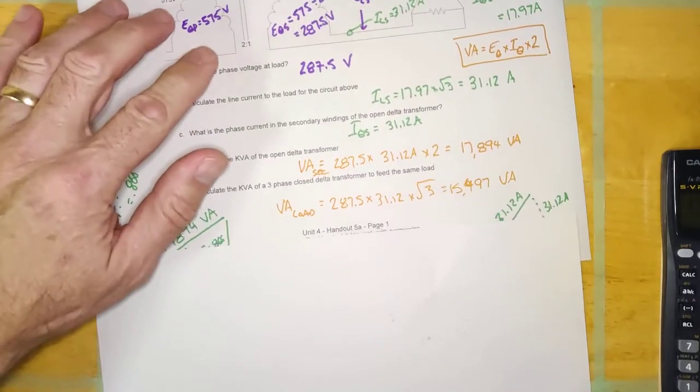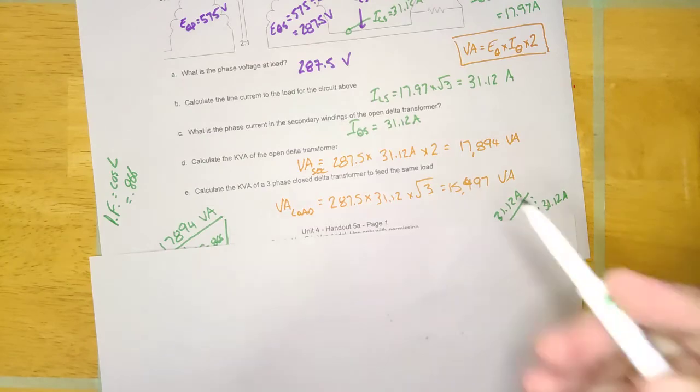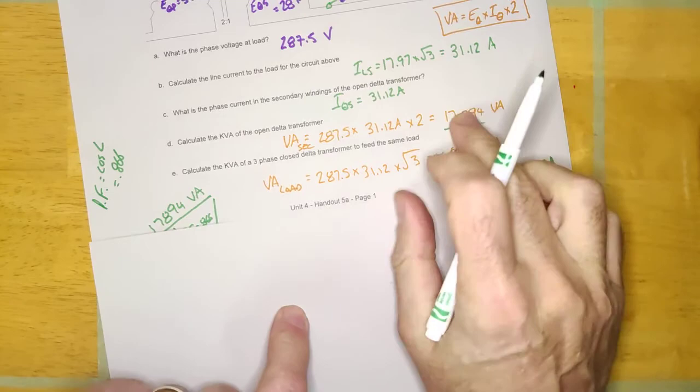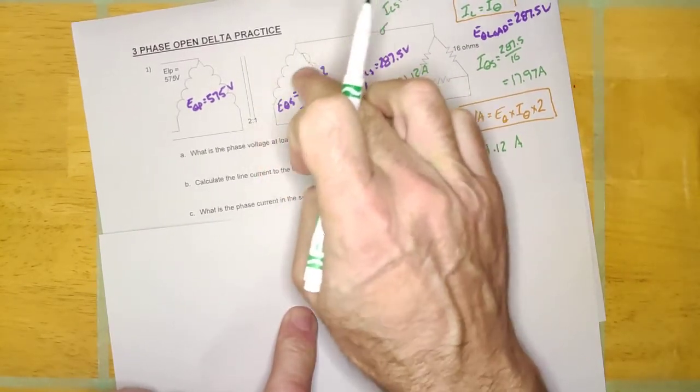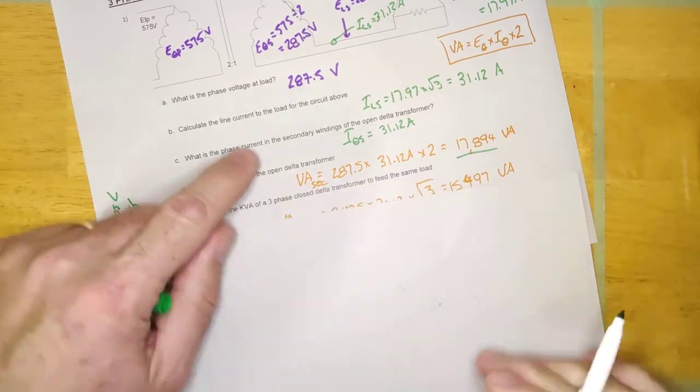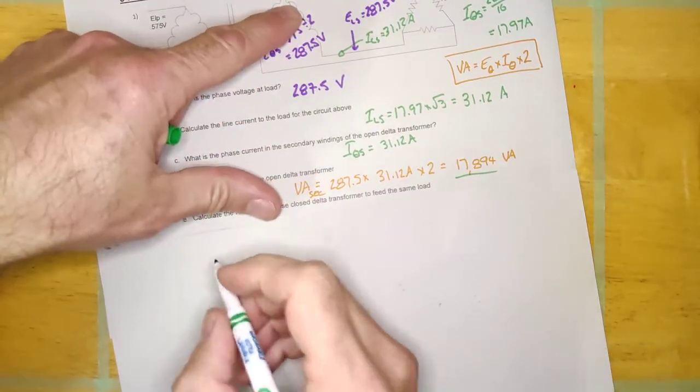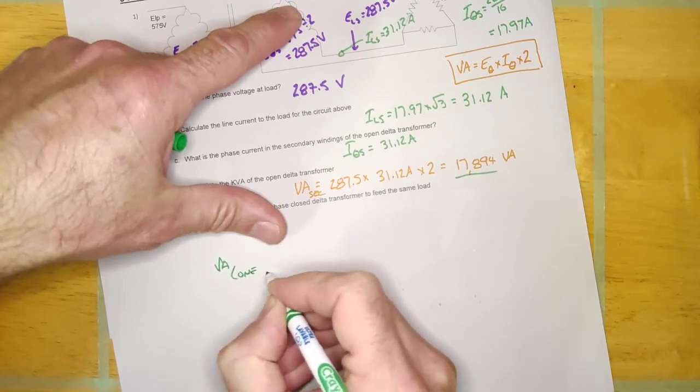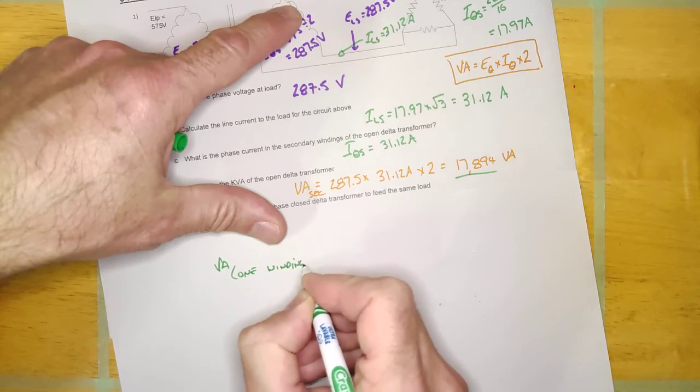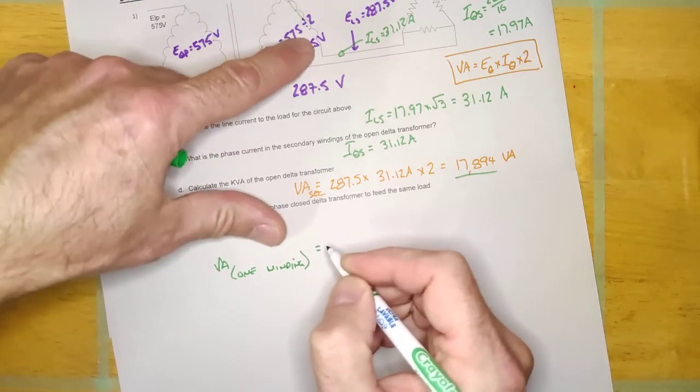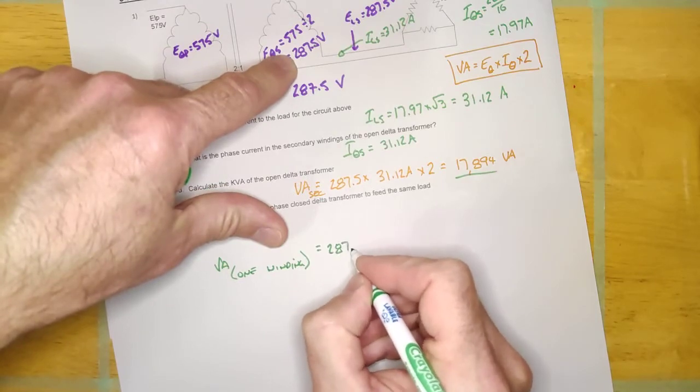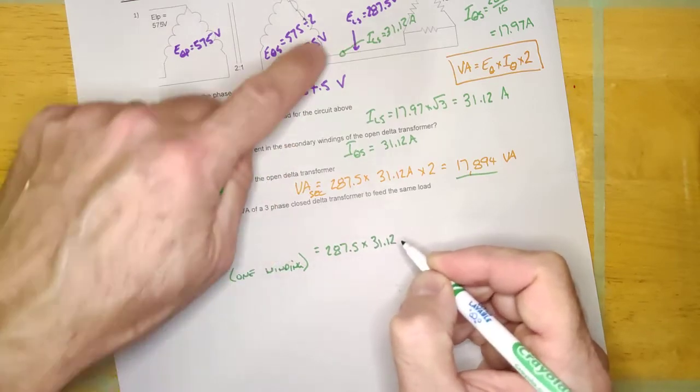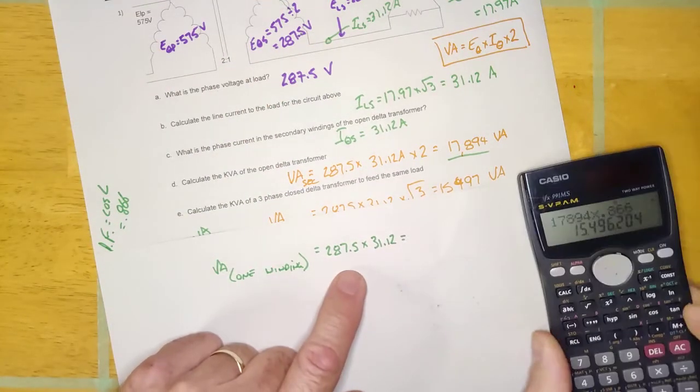Let's think about what's going on here. We've got an open delta transformer, we decided that it is 17,894 VA. If it's 17,894 VA, then each one of these will be half that, right? So basically the VA of one of these windings, let's calculate it. VA of one winding of the transformer is going to be this voltage, 287.5, times this current, 31.12. It's E phase times I phase.